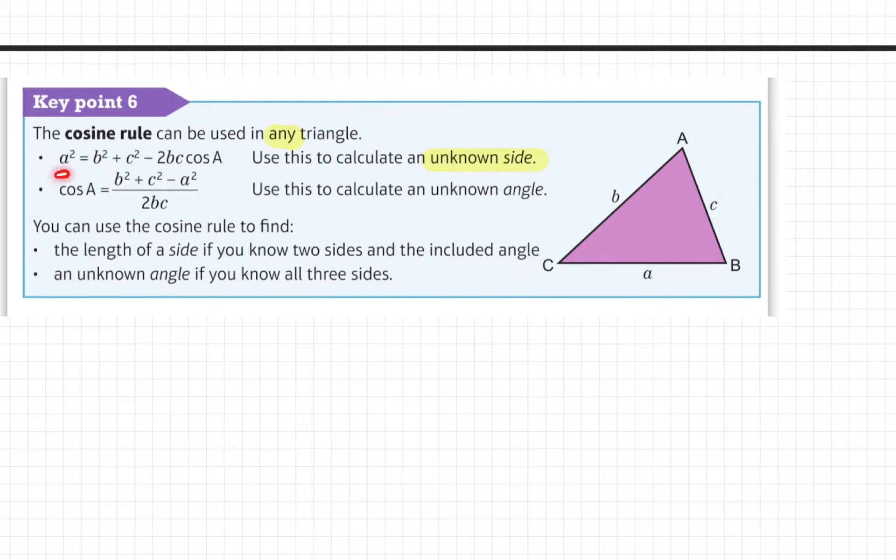If you want to find an unknown side, you're going to use this rule: a squared equals b squared plus c squared minus 2bc times cos A. And if you want to find an unknown angle, let's say angle A, you would use this formula.